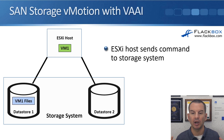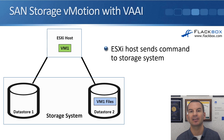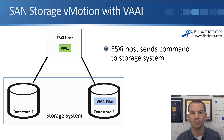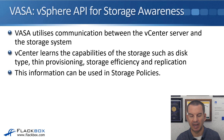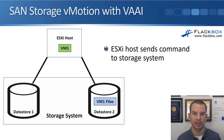Now let's look at what happens when we do have VAAI enabled. The ESXi host sends the command to the storage system and the migration happens directly on the storage system. Rather than passing through the ESXi host, the files move from one datastore to the other directly on the storage system. This offloads that function from the ESXi host, putting less load on the host and aiding performance. VAAI works for Storage vMotion, and also other functions like cloning a virtual machine or deploying from a template — that traffic won't have to go through the ESXi host.